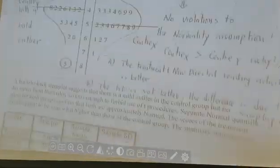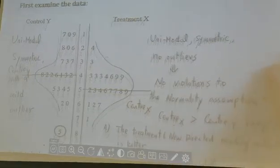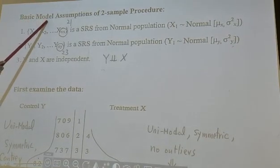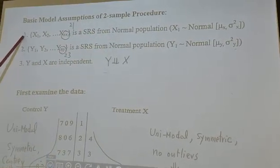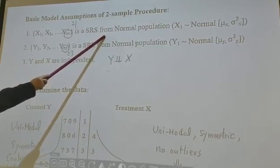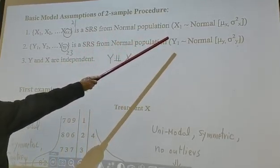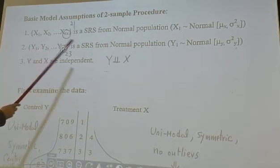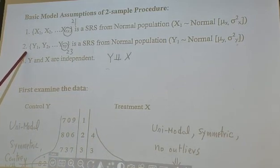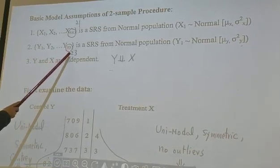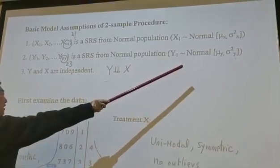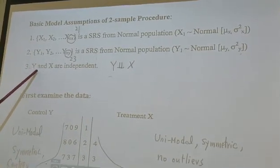Now let's look at the basic model assumptions of the two-sample procedure. First, we assume x₁, x₂, ..., x_nx — in our example, nx is 21 — is a simple random sample from a normal population. Specifically, x₁ follows a normal distribution with mean μx and variance σx², both of which are unknown in most real-life applications. Second, y₁, y₂, ..., y_ny — in our case, ny is 23 — is a simple random sample from a normal population, where y₁ follows normal with mean μy and variance σy². The third model assumption is that x and y are independent.